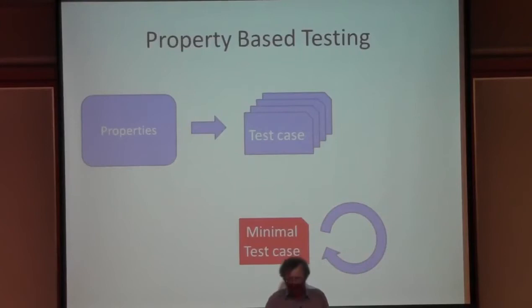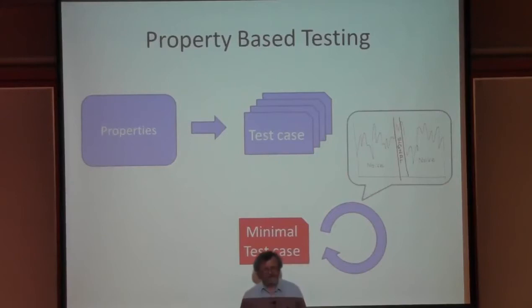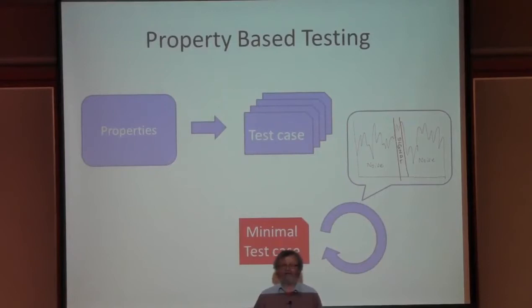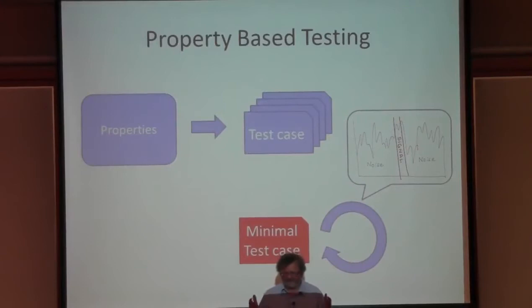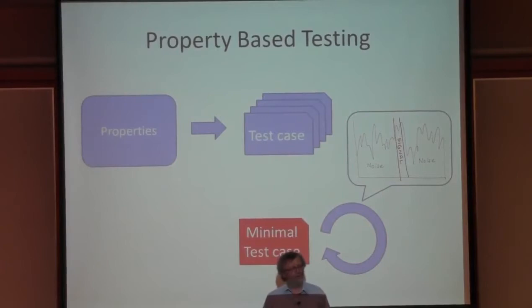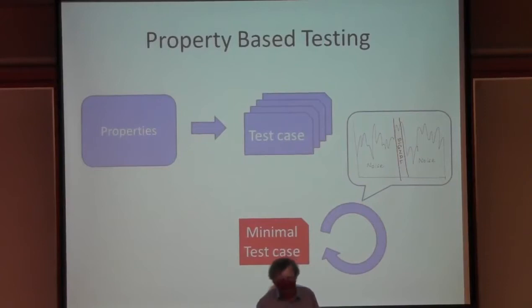This shrinking process is really incredibly valuable for testing. When we generate random tests for real software, they're often very large and very random. Random tests contain a whole lot of noise that has nothing to do with an actual test failure. So when a test fails, you've got all kinds of irrelevant nonsense in there, plus one or two features that make the test fail. If you try to diagnose the problem from a large random test case, you'll spend more time than with other testing methods. The purpose of shrinking is to extract the signal from the noise and present the user with a counterexample that is concise and easy to diagnose.